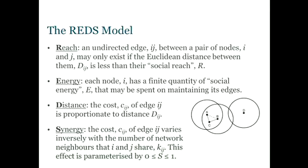So in a little equation, the cost of an edge C-I-J is proportional to the distance, but it's reduced, divided by the number of shared neighbors that those two nodes have, parameterized by this value S. If S is zero, we recover a random geometric graph, because this term is one. If S is one, then that's a maximum synergy effect.